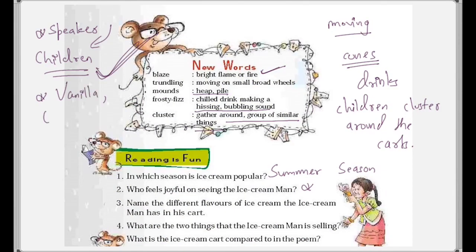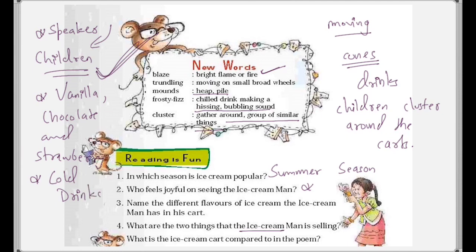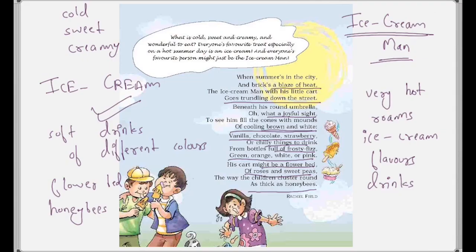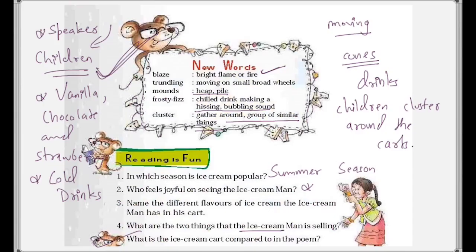He has the following flavors: vanilla, chocolate, and strawberry. What are the two things the ice cream man is selling? He is selling ice cream and cold drinks. What is the ice cream man's cart compared to in the poem? It is compared to a flower bed — flower beds of roses and sweet peas — because the children are compared to honeybees, and as honeybees cluster around flower beds, children cluster around the ice cream man's cart. So we are done with all five questions.